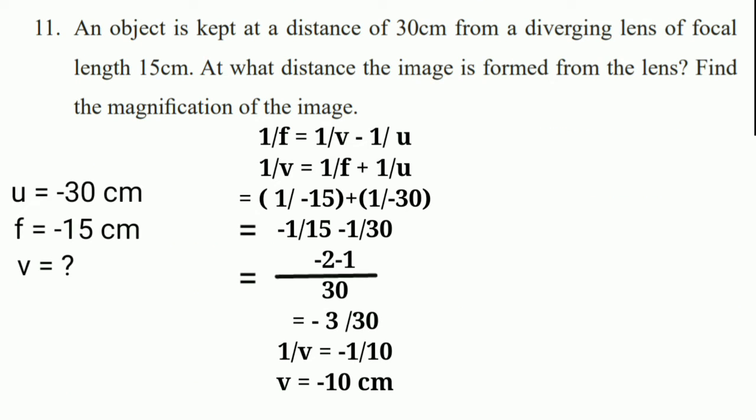Next problem: an object is kept at a distance of 30 cm from a diverging lens of focal length 15 cm. At what distance is the image formed from the lens, and find the magnification. The formula to use is 1/f = 1/v − 1/u. Rearranging: 1/v = 1/f + 1/u.